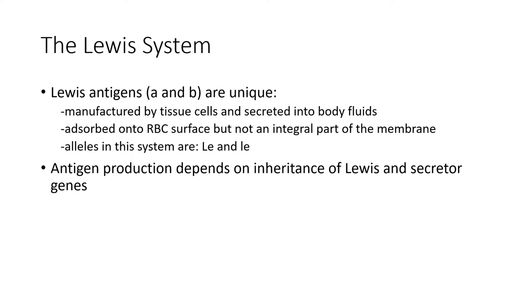The Lewis antigens, Lewis A and B, are unique in the way that they are inherited and manufactured. The antigens are manufactured by tissue cells and secreted into body fluids. The antigens then absorb onto the surface of the red blood cells without becoming an integral part of the membrane. The alleles are capital LE and lowercase le. The production of antigen depends on the inheritance of not only the Lewis genes, but also the secretor gene.